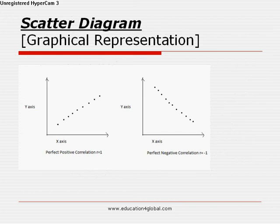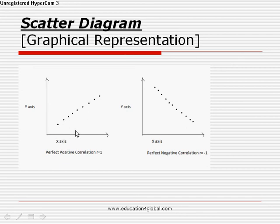Here we are showing some scatter diagrams. In the first diagram, the x-axis and y-axis are shown and from the pair of data we plot some dots on the graph. We see that if the value of x is increased, then the value of y is also increased; or if x is decreased, y also decreases. This is called positive correlation. All the dots follow a straight line, so this is perfect positive correlation. The value of coefficient of correlation r is 1.